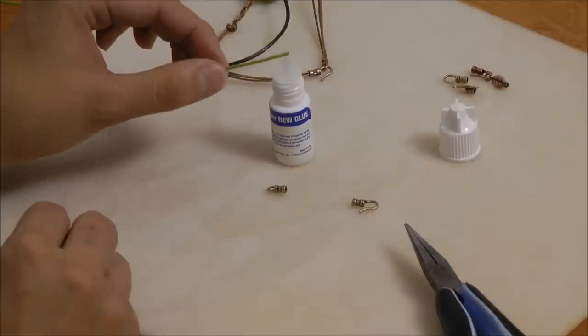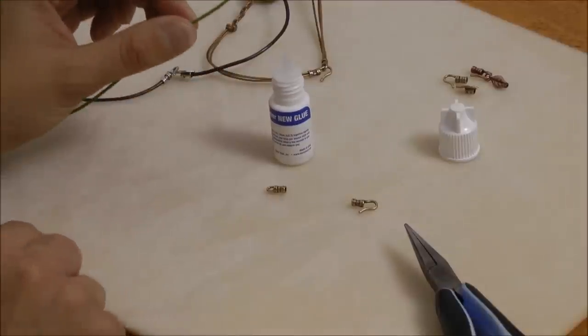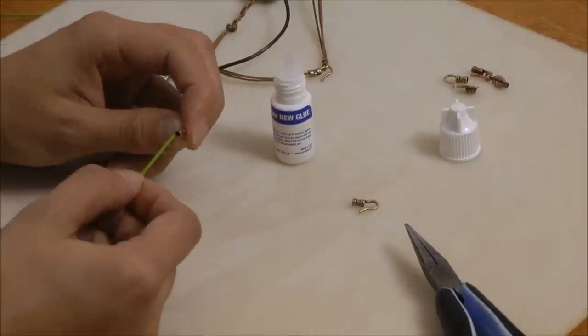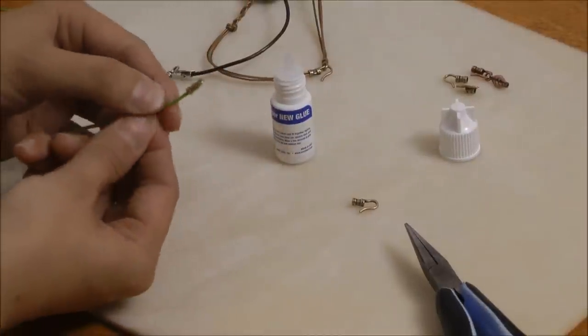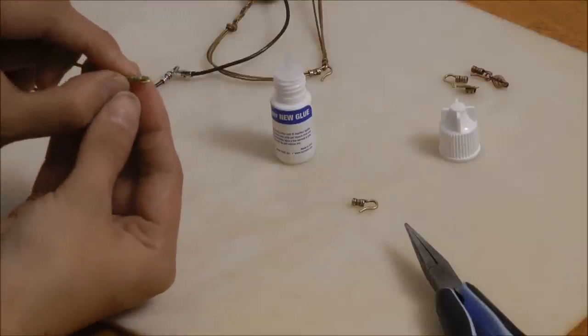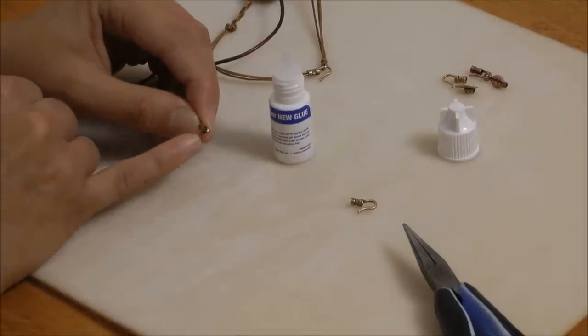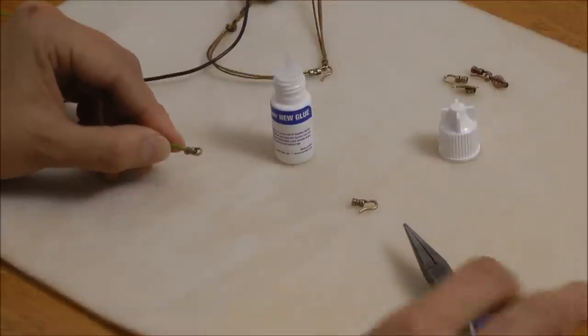This way I know I'm just going to get enough glue to work, but not enough so that it's going to goop through. Next I'm going to take my clasp and I'm going to feed that leather cord right into the end. Now I want to set it so that that leather cord end is just barely visible, just right at the edge of the inside of that leather clasp. Once it's right in there.